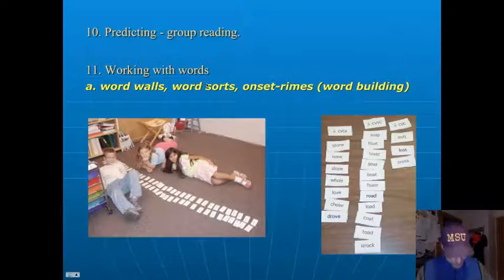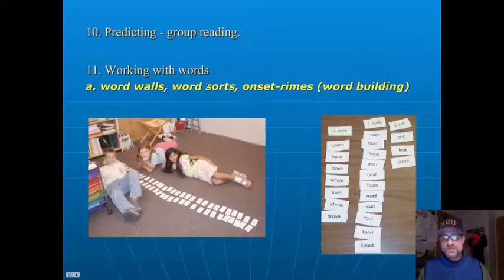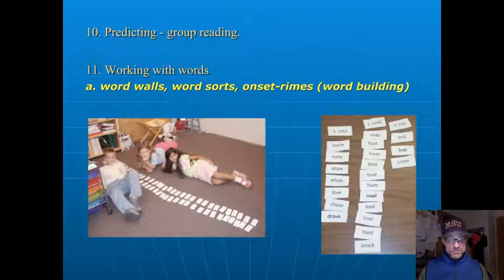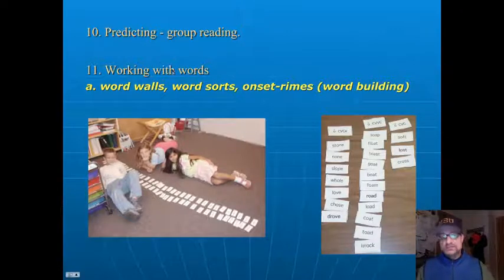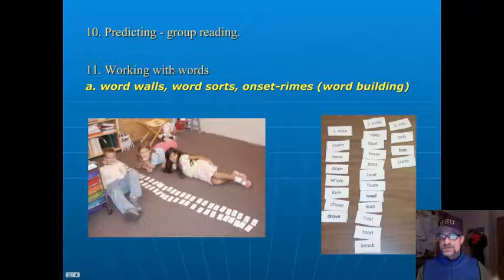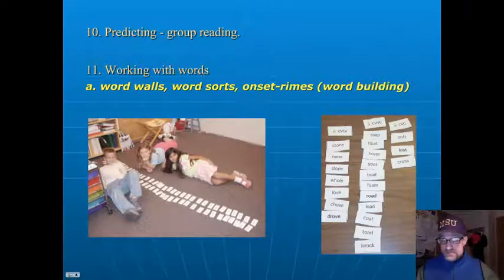Predicting and group reading: you're reading stories in a group and children are having a good time enjoying the book. Helping children fall in love with books is the number one task of a teacher. You just stop at places and ask, 'What do you think will happen next?' Children make predictions based on what has happened, and then you say, 'Let's read to find out.'